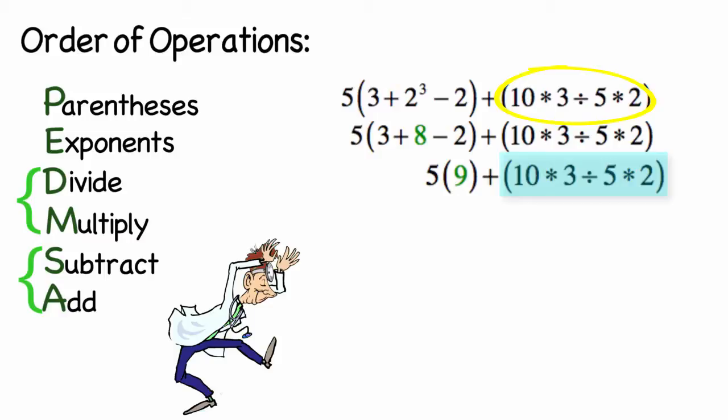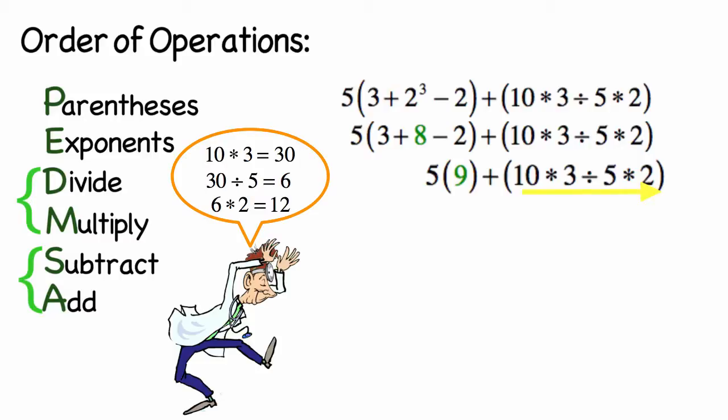In the second grouping, we will divide and multiply from left to right. 10 times 3 is 30. Divide that by 5, we get 6. Multiply that by 2, and we get 12.